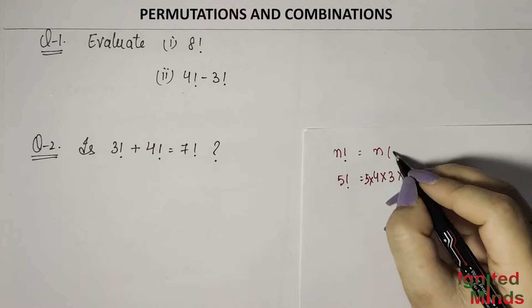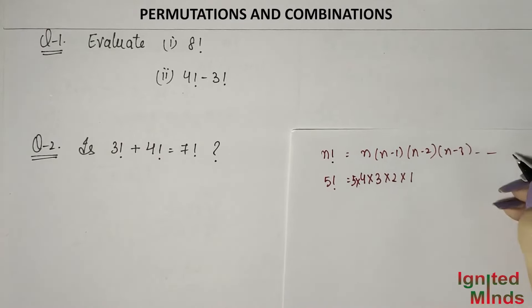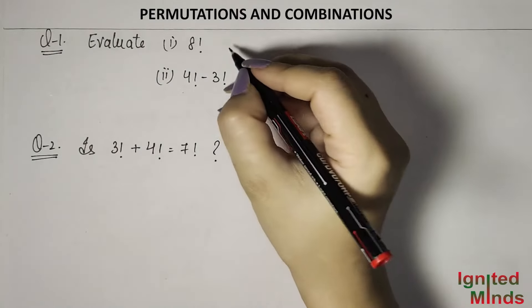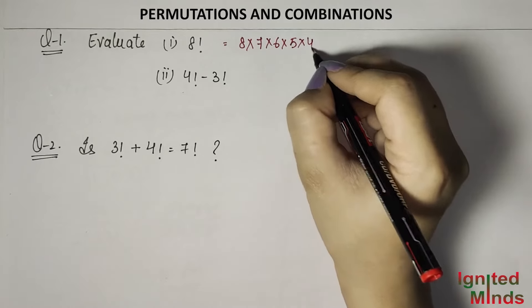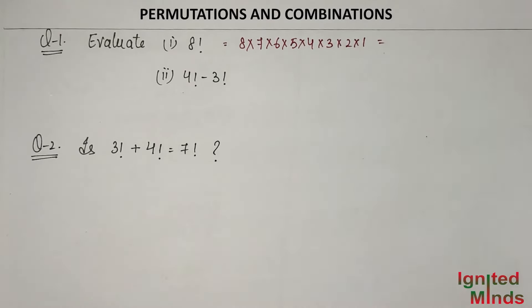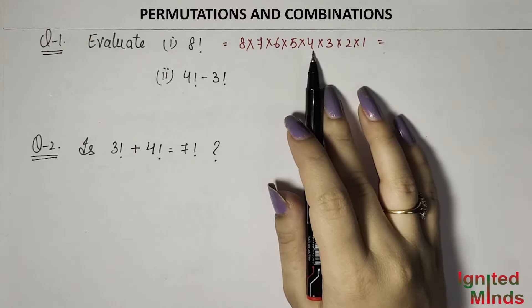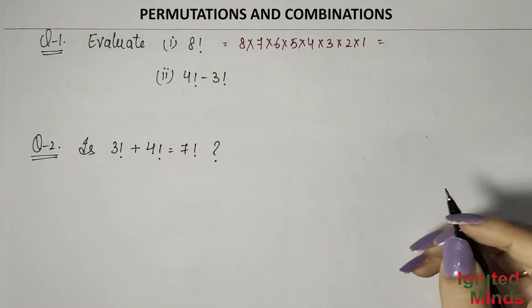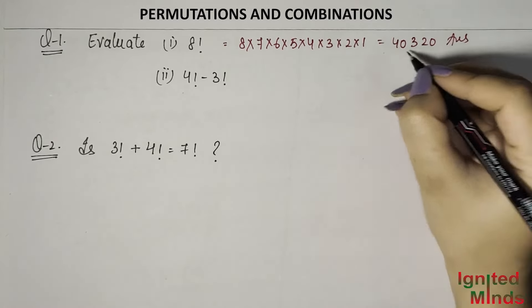So if we open n factorial, it goes: n × (n−1) × ... × 3 × 2 × 1. Let's start solving — we open 8 factorial: 8 × 7 × 6 × 5 × 4 × 3 × 2 × 1. When we multiply it all out, we get 40,320. That is your answer.